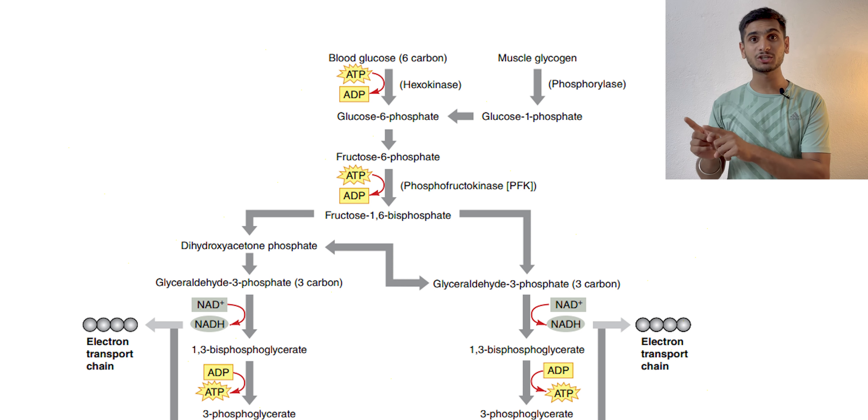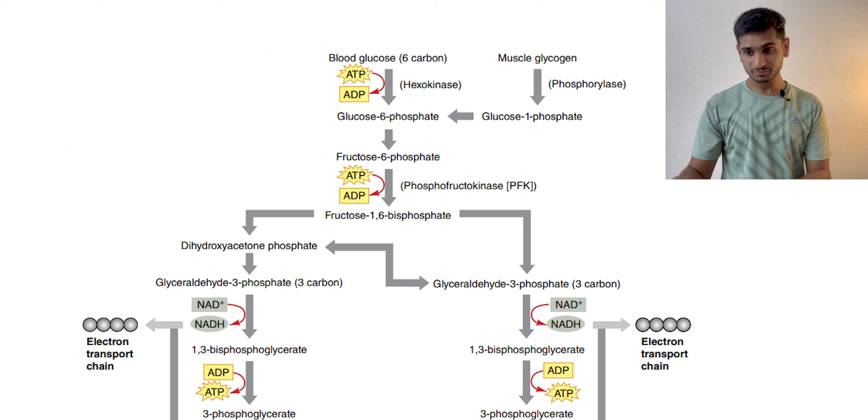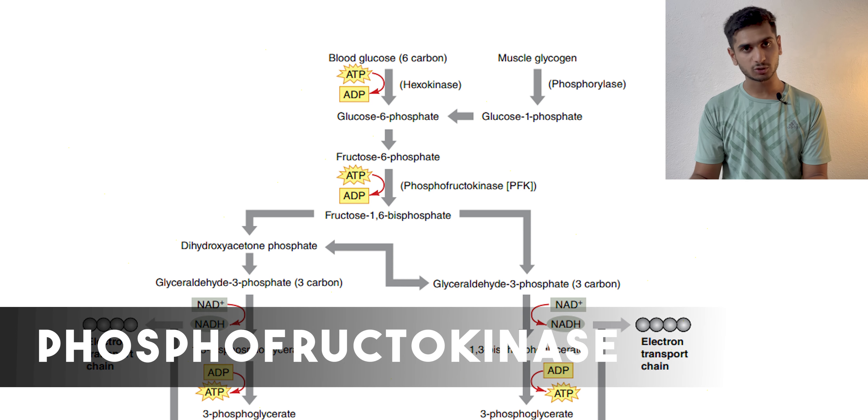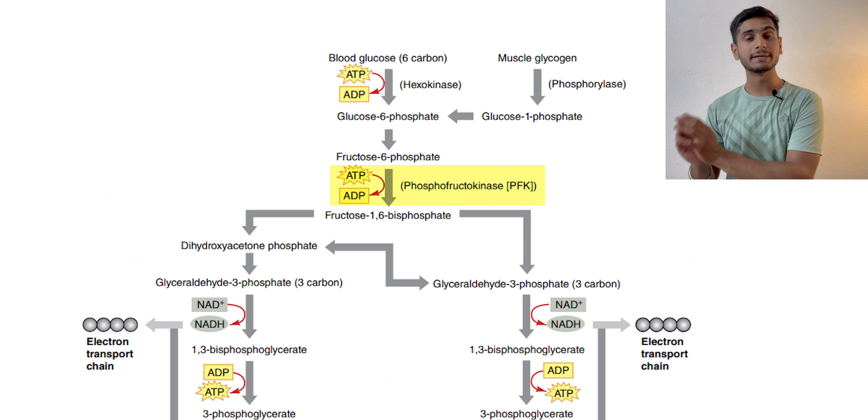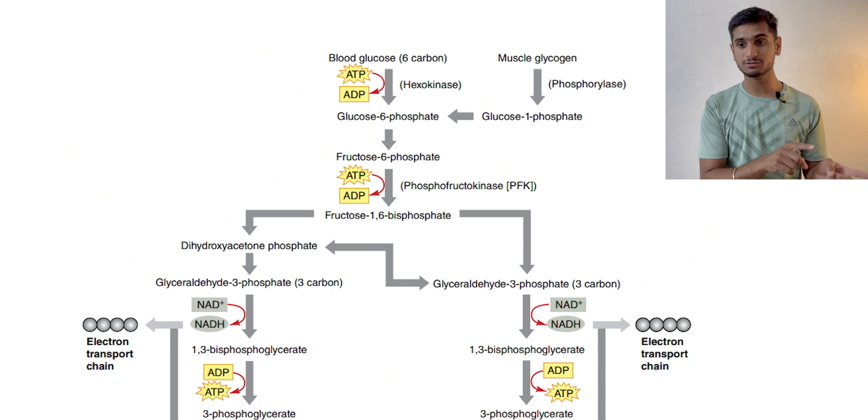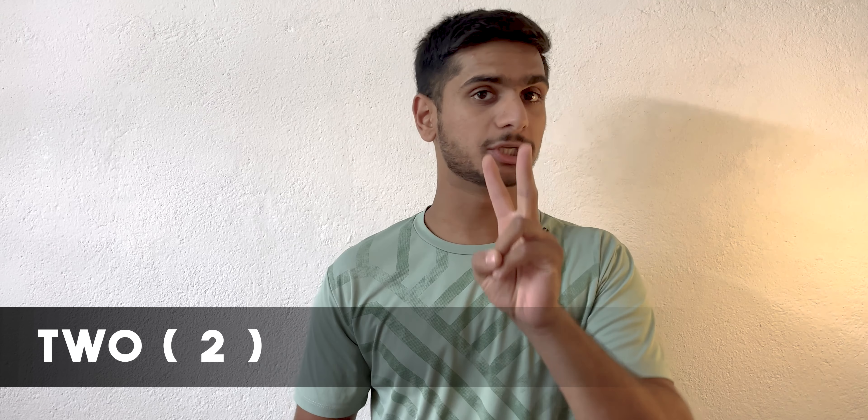The second step of glycolysis is phosphofructokinase, which is the rate-limiting step and also requires ATP. If glycolysis begins from a blood glucose molecule, the gross ATP resynthesis is four but the net ATP resynthesis is only two. On the other hand, if it begins from muscle glycogen, the gross ATP is again four but the net ATP resynthesis is three. This is why optimal muscle glycogen levels are critical, making carbohydrate loading very important.